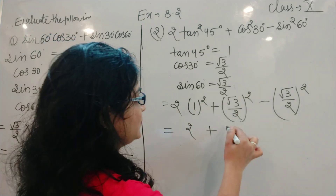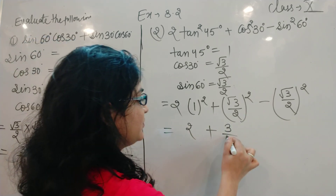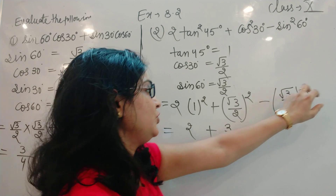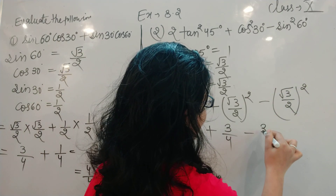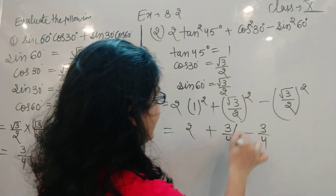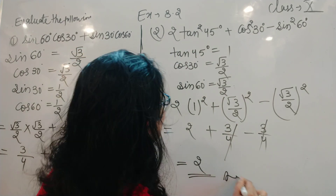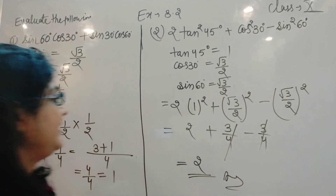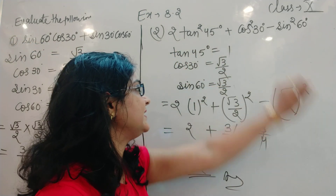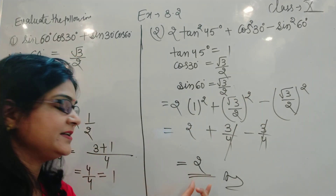√3 squared = 3, and 2 squared = 4, giving 3/4. Minus: √3 squared = 3, 2 squared = 4, giving 3/4. So 3/4 minus 3/4 cancels out. The answer is 2. Therefore, 2 tan² 45° + cos² 30° − sin² 60° = 2.